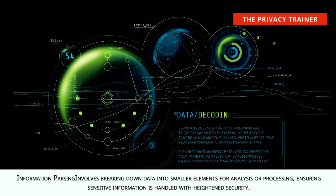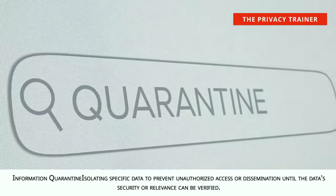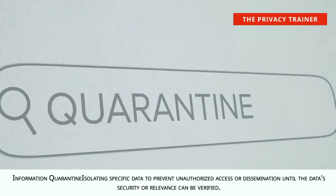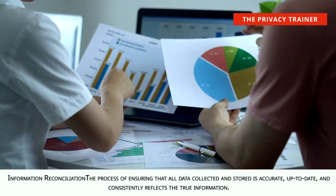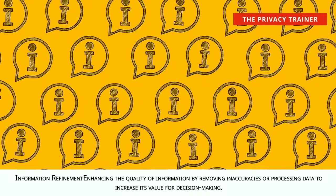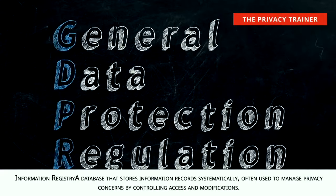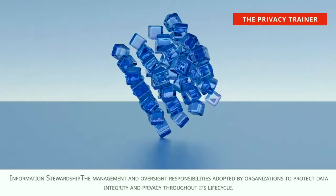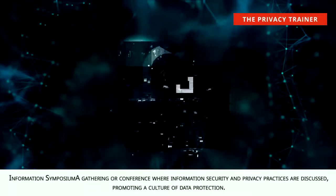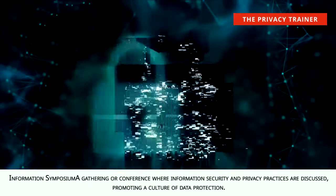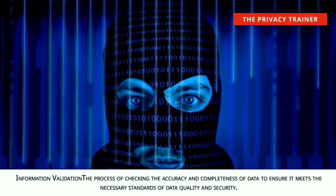Information masking. A data protection strategy used to hide sensitive information from unauthorized access during processing or storage. Information oversight. The monitoring and regulation of information handling processes to ensure they comply with established privacy policies and legal requirements. Information parsing. Involves breaking down data into smaller elements for analysis or processing, ensuring sensitive information is handled with heightened security. Information quarantine. Isolating specific data to prevent unauthorized access or dissemination until the data's security or relevance can be verified. Information reconciliation. The process of ensuring that all data collected and stored is accurate, up-to-date, and consistently reflects the true information. Information refinement. Enhancing the quality of information by removing inaccuracies or processing data to increase its value for decision making. Information registry. A database that stores information records systematically, often used to manage privacy concerns by controlling access and modifications.